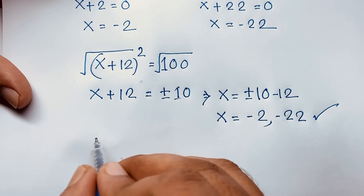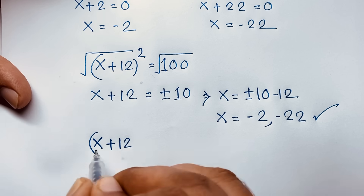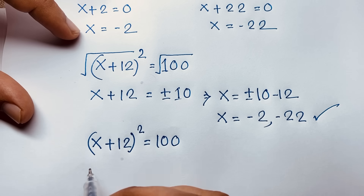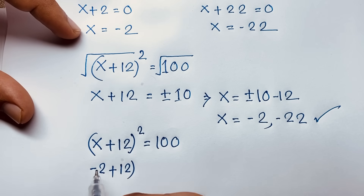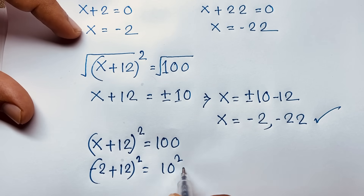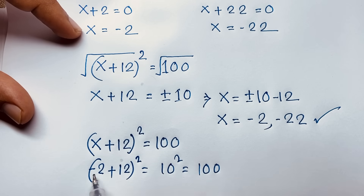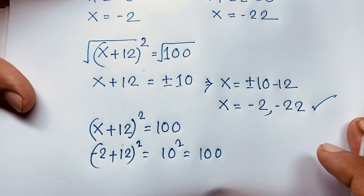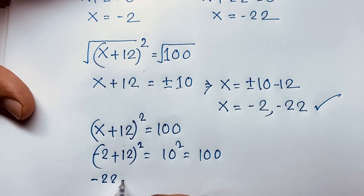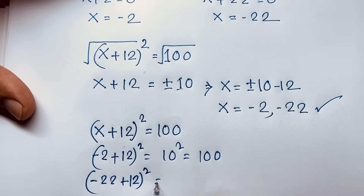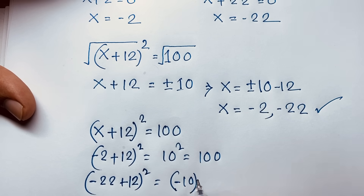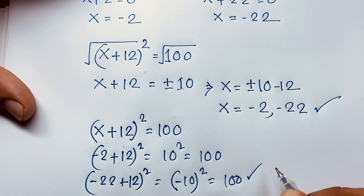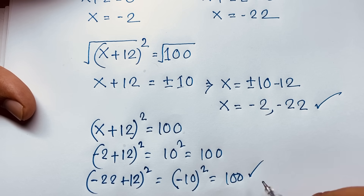Let's verify. Our question is (x + 12)² = 100. Taking x = −2: (−2 + 12)² = 10² = 100. Then taking x = −22: (−22 + 12)² = (−10)² = 100. Since the power is an even number, it is always positive. So left-hand side and right-hand side are both equal in this math problem.